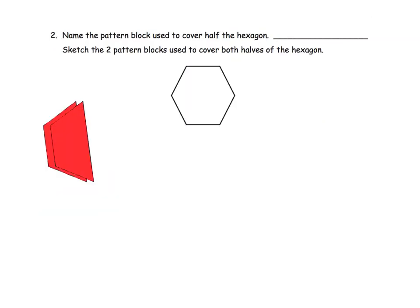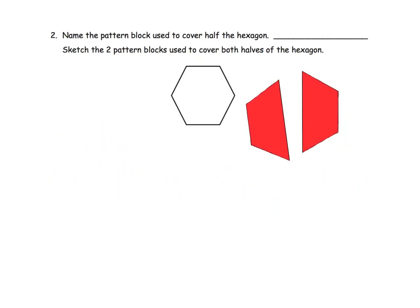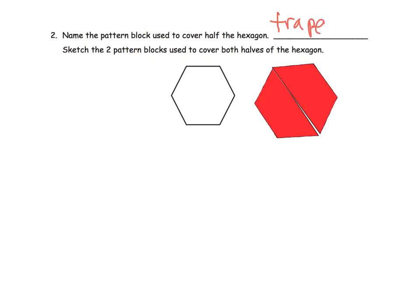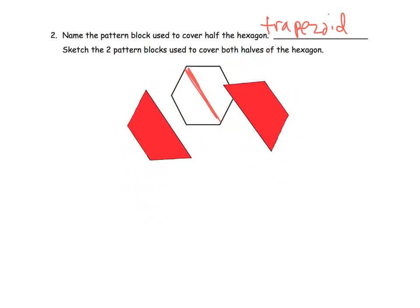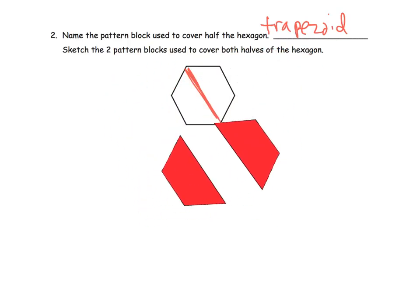So here it says, again, name the pattern block used to cover half of the hexagon. So if we've got these figures, and I've kind of made it easy, two trapezoids makes a hexagon. So what is the pattern block used to cover half the hexagon? It's a trapezoid. And then how would we sketch it? Right there. Right in half. We cut it in half. See how these two trapezoids kind of... right there. There's our hexagon. And it takes two trapezoids to make a hexagon.